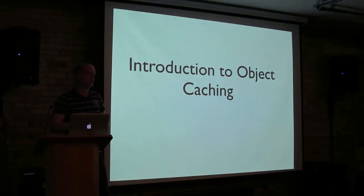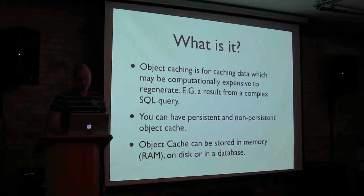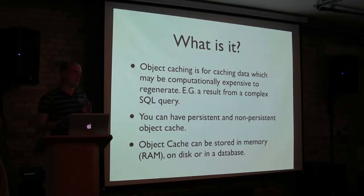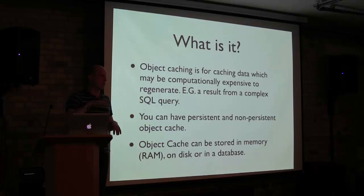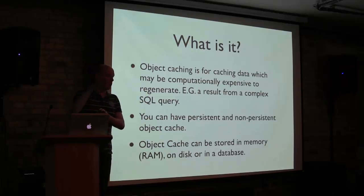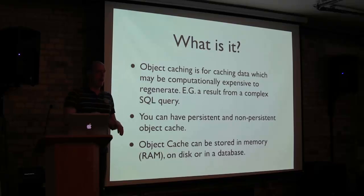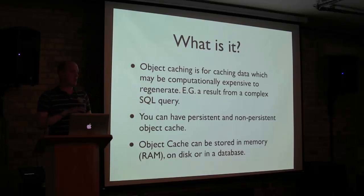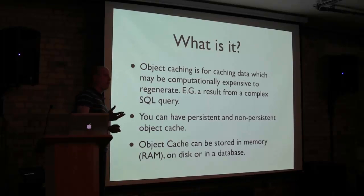I'm going to do a talk about an introduction to object caching. So what is it? Object caching is a way to cache data that is computationally expensive to get from your system, whether it's from the database. An example is if you do a query to get some information on the sidebar, like yet another related posts plugin — that will do a really complicated query to your database to get related content. What object caching does is, once I've got that data, I store it so if I need to call upon that data again, I don't have to do that complicated query.